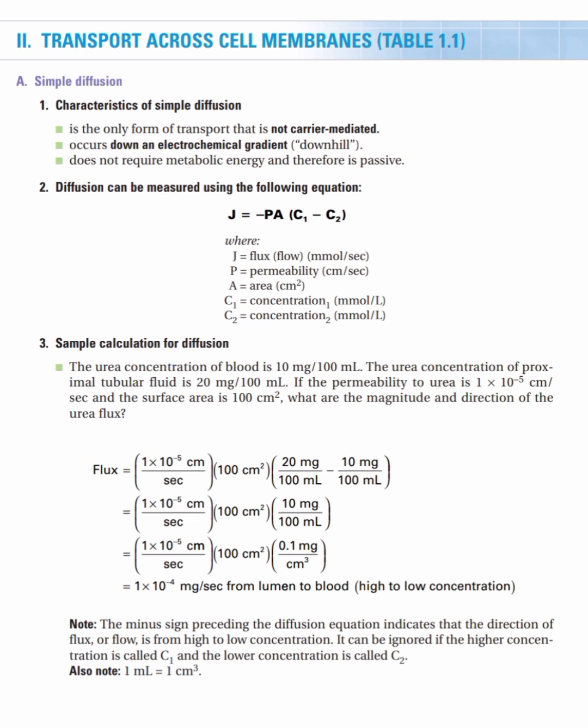Under passive transport, we have simple diffusion and facilitated diffusion. Simple diffusion is the only form of transport that is not carrier-mediated. The key difference is that simple diffusion is not carrier-mediated, whereas facilitated diffusion is. Both are passive — they involve movement of a substance down the electrochemical gradient and do not require metabolic energy.